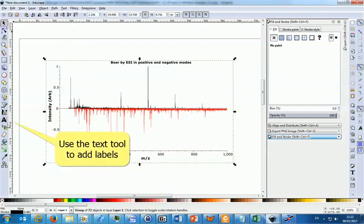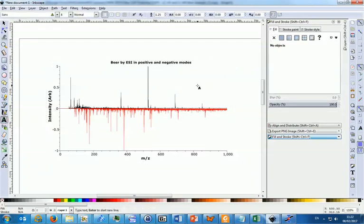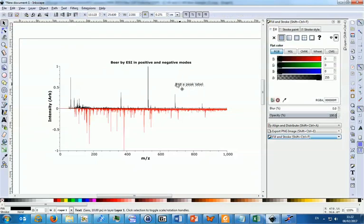Use the text tool to allow you to add labels onto any drawing. Type the label of the first peak you want to label. Note either use a label number like peak 1 or actually type the ionic formula of the ion you've assigned. Move the label near to the assigned peak.